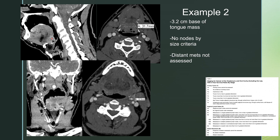Example two: we have a mass involving the base of tongue, also known as the lingual tonsils. It measures approximately 3.2 centimeters in transverse diameter, its maximum dimension. There were no pathologically enlarged lymph nodes — this level two lymph node measures 1.1 centimeters in short axis, which is within the allowed 1.5 centimeter threshold. Distant metastases were not assessed. Using our TNM staging, the tumor is greater than two but less than four centimeters, no lymph nodes, distant mets not assessed. Final staging: T2N0MX.